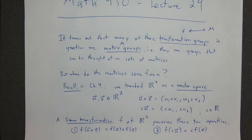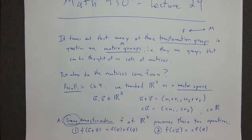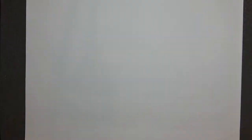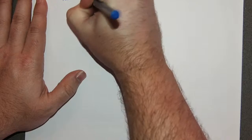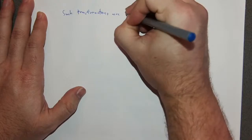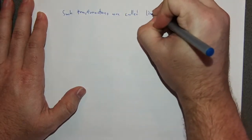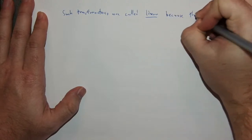You can combine these to say that linear combinations are preserved. Why is this called a linear transformation? It's called linear because it maps lines to lines — it preserves the straightness of lines.